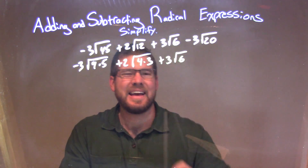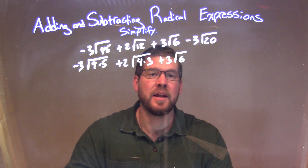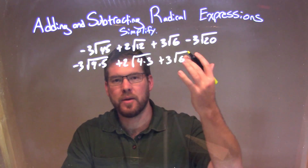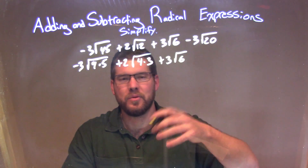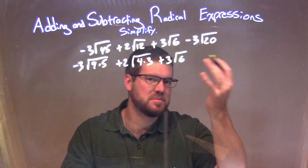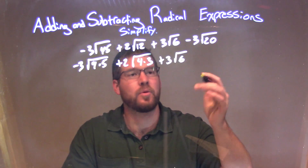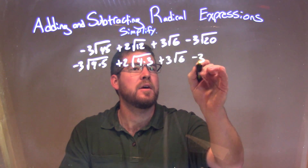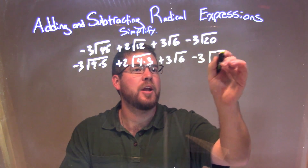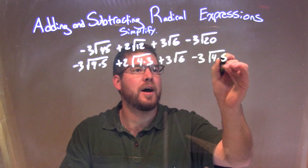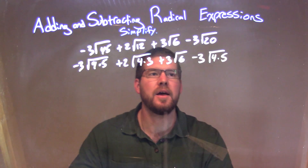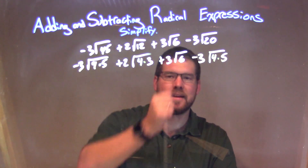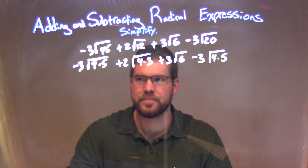Square root of 6, I can't simplify anymore. There's nothing really to break down as 2 times 3, because I can't take the square root of 2 or 3 individually. Square root of 20 — I know I can do it as 4 times 5, and I choose 4 times 5 because I know I can take the square root of 4.